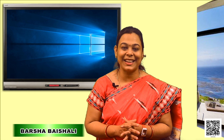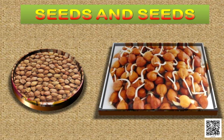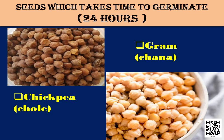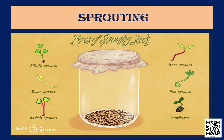Welcome students to another exciting online lesson of chapter 5, Seeds and Seeds. We have already covered most of the interesting facts about seeds in the first part of the course. We learned that seeds need air and moisture to germinate, we learned the process of germination, and we also learned about the process of sprouting. We read about the parts of a seed.